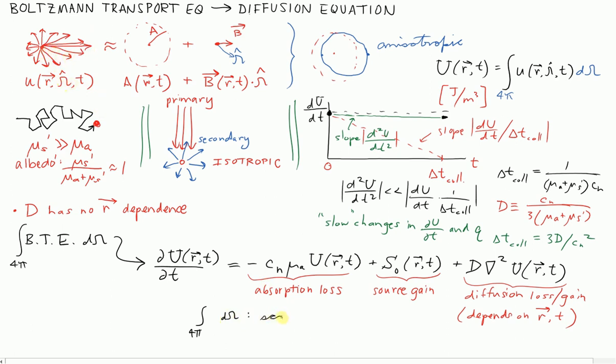Any photon that scatters out of the beam heading in direction omega hat starts going in another direction, omega hat prime. Any in-scatter that comes into direction omega hat was lost from that incident direction, omega hat prime. So scattering changes, scattering events don't affect the bookkeeping.